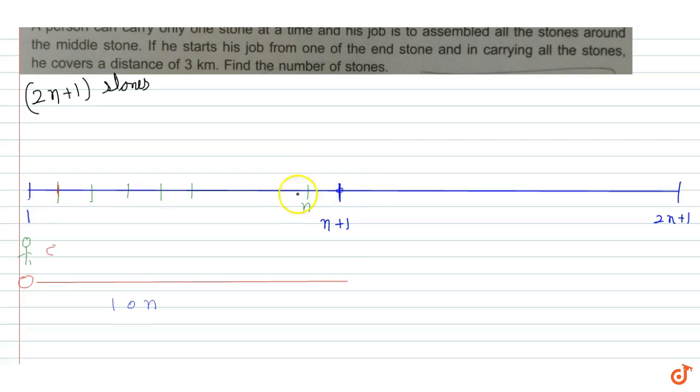For the second stone, the distance is 10 times n minus 1 going and n minus 1 coming back, so 10(n-1). Similarly, for each stone the distance is 10(n-2), and so on, until the last stone which is 10 meters going and 10 meters coming.